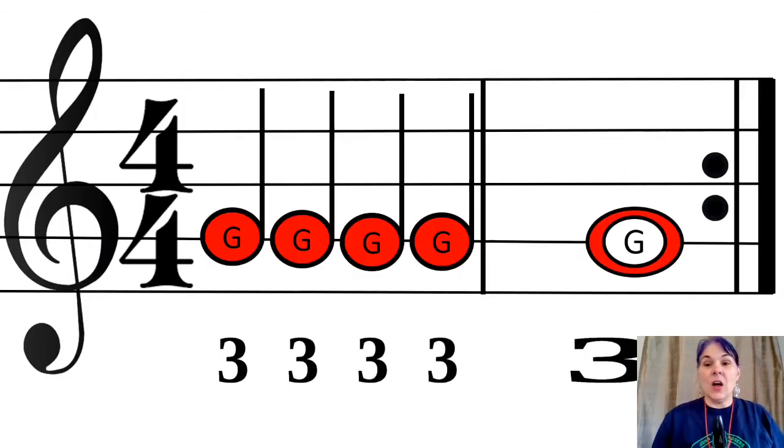This is how it looks on a staff. G is now red because in the do re mi solfege it's a do right now in our pitches. So it looks like this now, and there you can see that nice round whole note for the G. Here we go, let's play together, ready. And the three underneath there reminds you to use all three of your fingers.